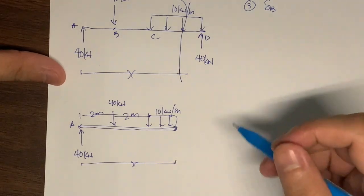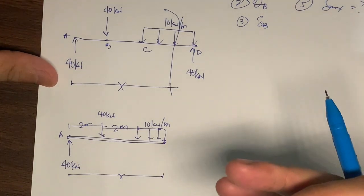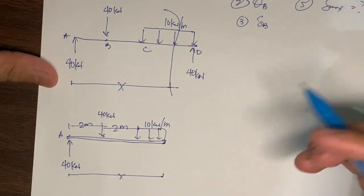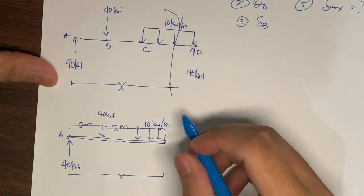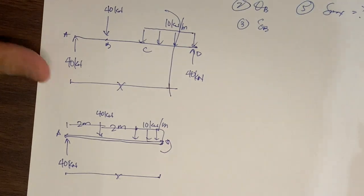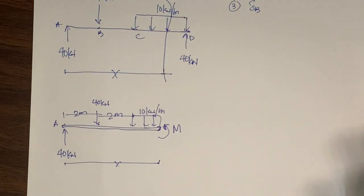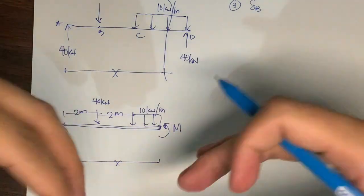We take moments at this cut point at distance x. In statics of rigid bodies, cutting any section produces an internal moment, axial force, and shear. Since we only need the moment equation, we place the internal moment here. I assume a counterclockwise direction because we always tend to assume a positive direction — a positive moment makes the beam smile.